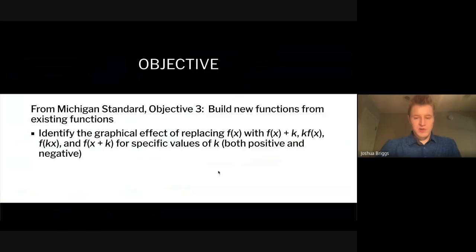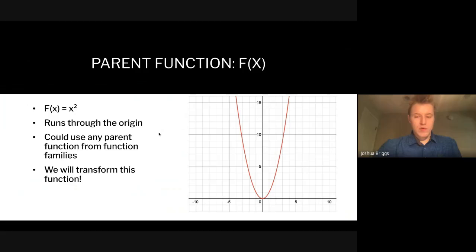In the Michigan Standard there is an objective that says we want to understand the effect of replacing a function f(x) with different values of k. We can add k, which is called a translation; we can subtract k, also a translation. We can do those operations on the inside or outside, and we can also multiply by k, a constant, which changes the graph and is called a transformation.